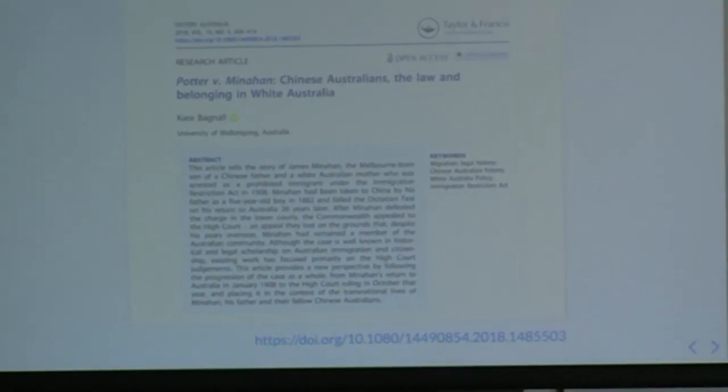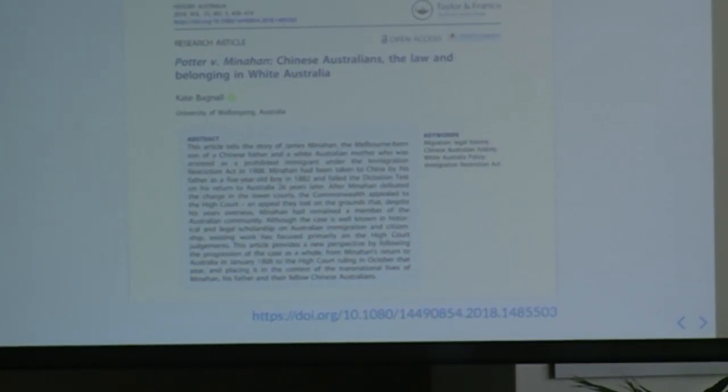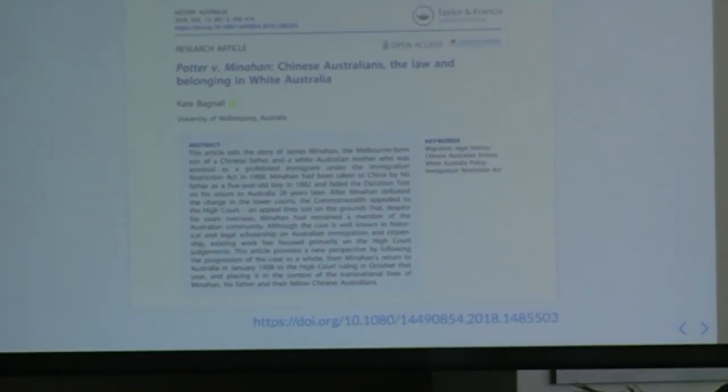Kate Bagnall, my partner in many things, recently published an account of the James Minahan case in the journal History Australia. But the story is so rich in detail, and in order to have it accepted in a conventional academic journal, Kate had to cut back on the narrative parts and boost the theory parts. So we're working on another version — a LOD Book version — which puts back all of Kate's narrative and adds in much more in terms of people, places, relationships and resources.